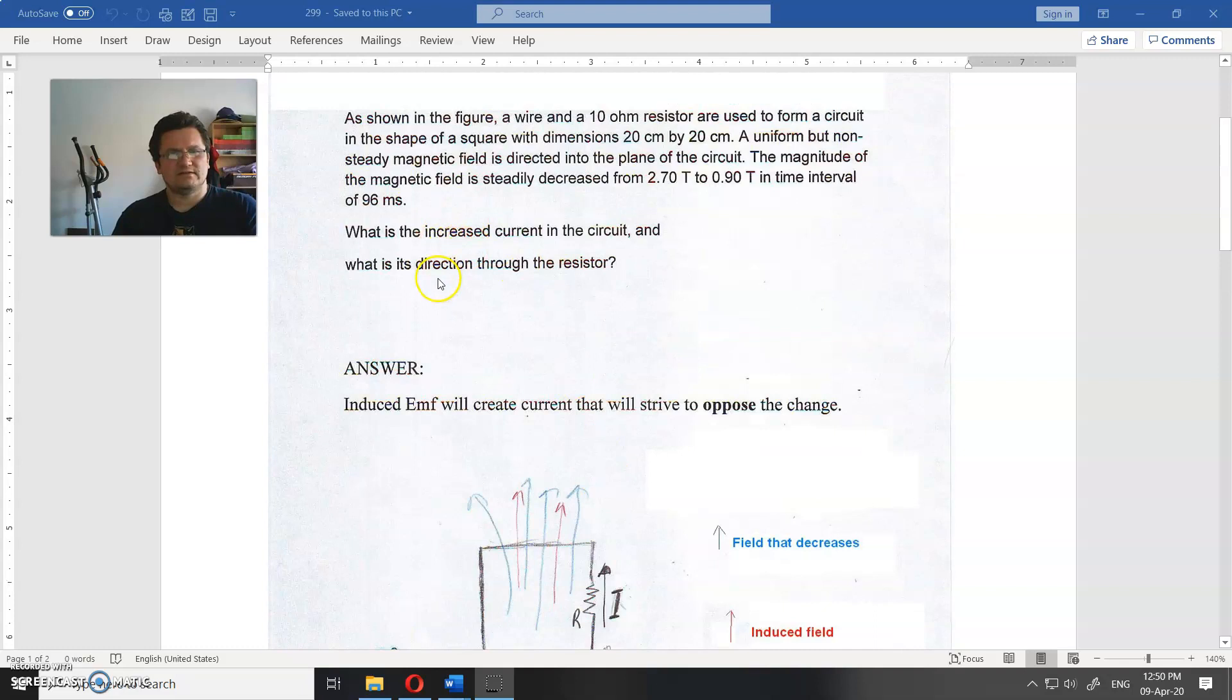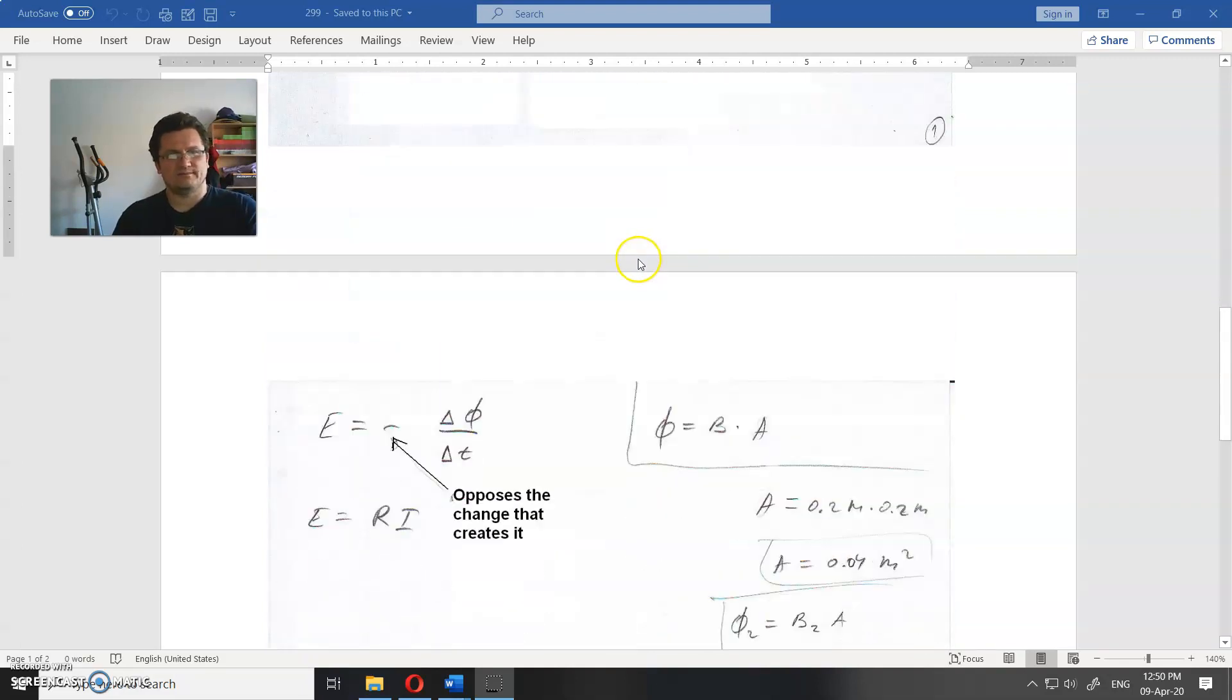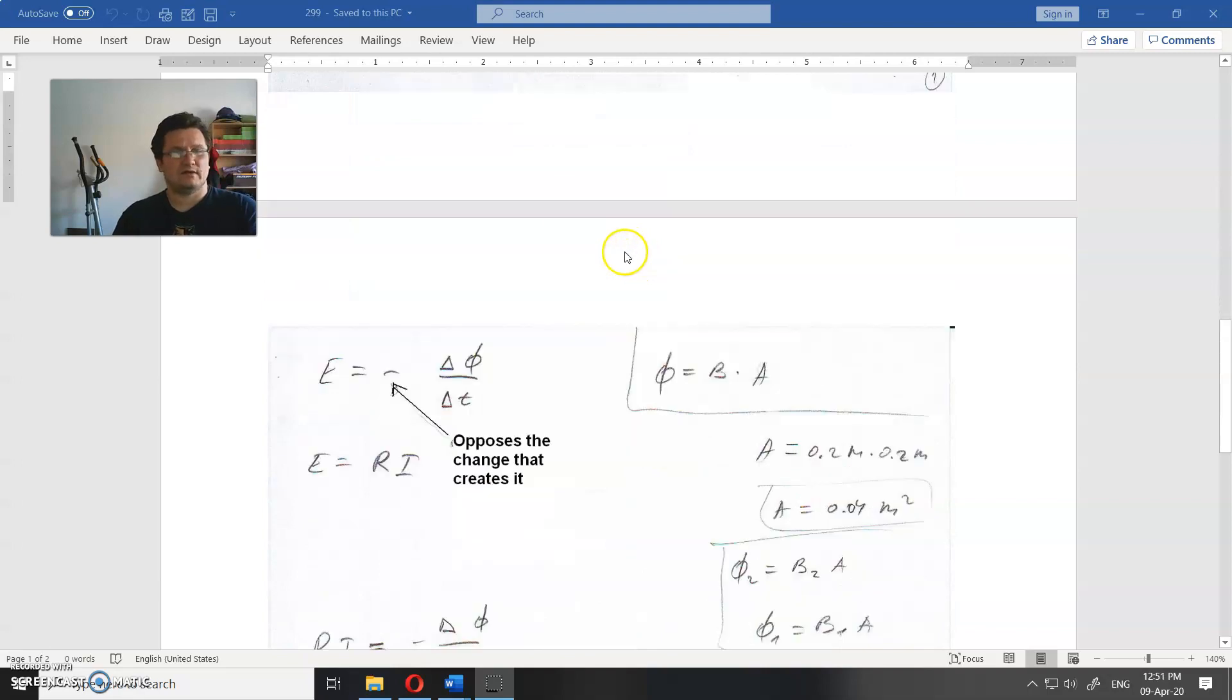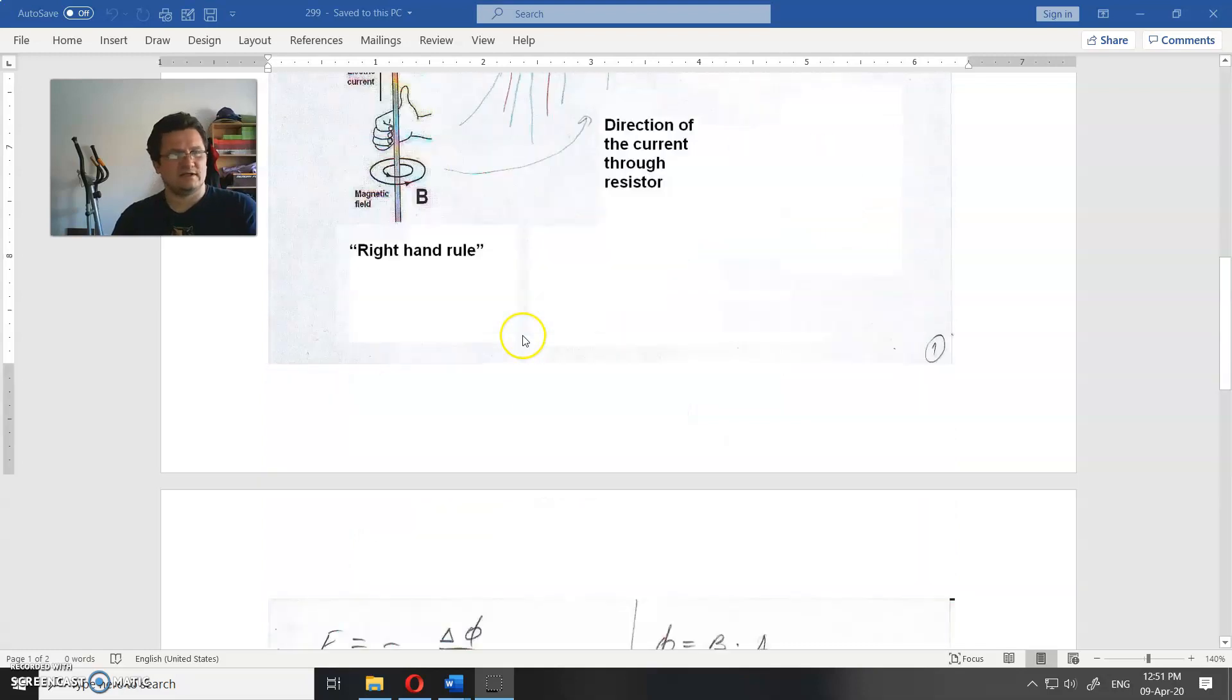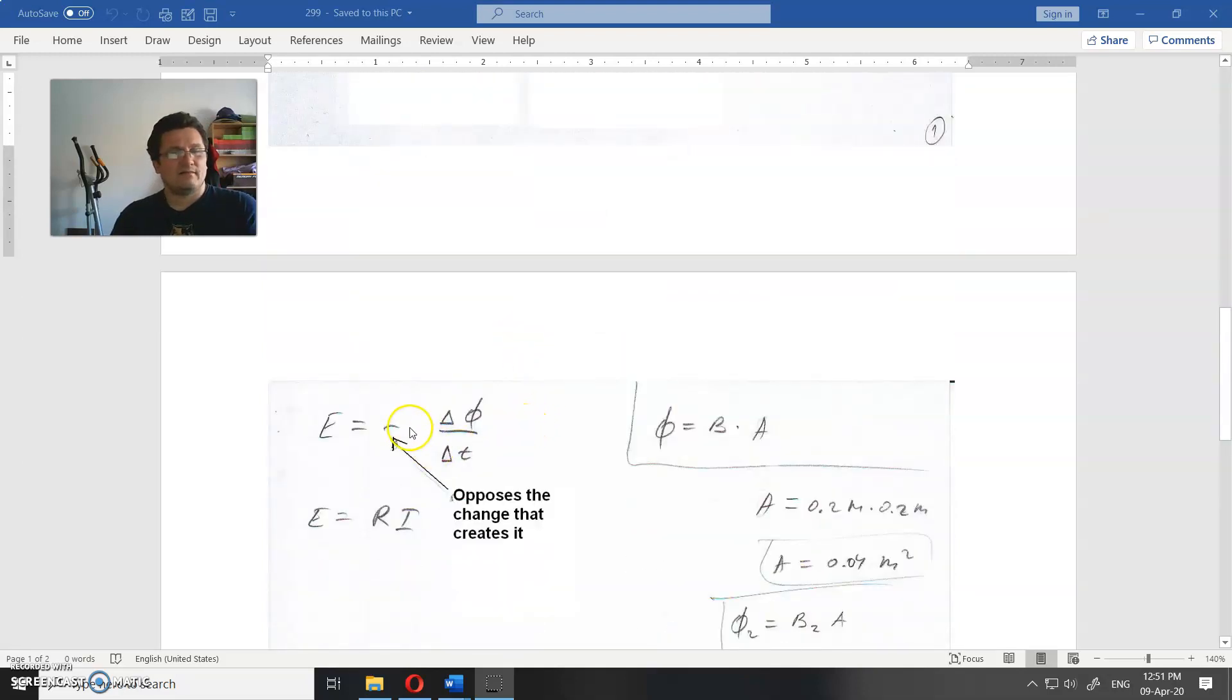What is the induced current? Now to find the magnitude. Electromagnetic force E, that is induced voltage that is induced in this circuit. The minus is just to show that it opposes the change in this assignment. So, that induced voltage is equal to the change of flux in time.